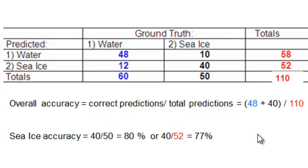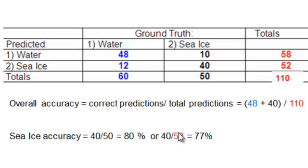We could also ask, for any class, what was the accuracy? For sea ice, you can look at it from two perspectives. One: we have 50 ground truth points that on the ground were sea ice, and of those 50, 40 were correctly predicted — so accuracy is 40 divided by 50. Or: there were 52 pixels predicted to be sea ice, and of those 52, 40 were correctly predicted — so accuracy is 40 divided by 52. When talking about class accuracy, there are always two estimates: of the ground truth points, how many were correctly predicted, or of the predictions, how many were correct.